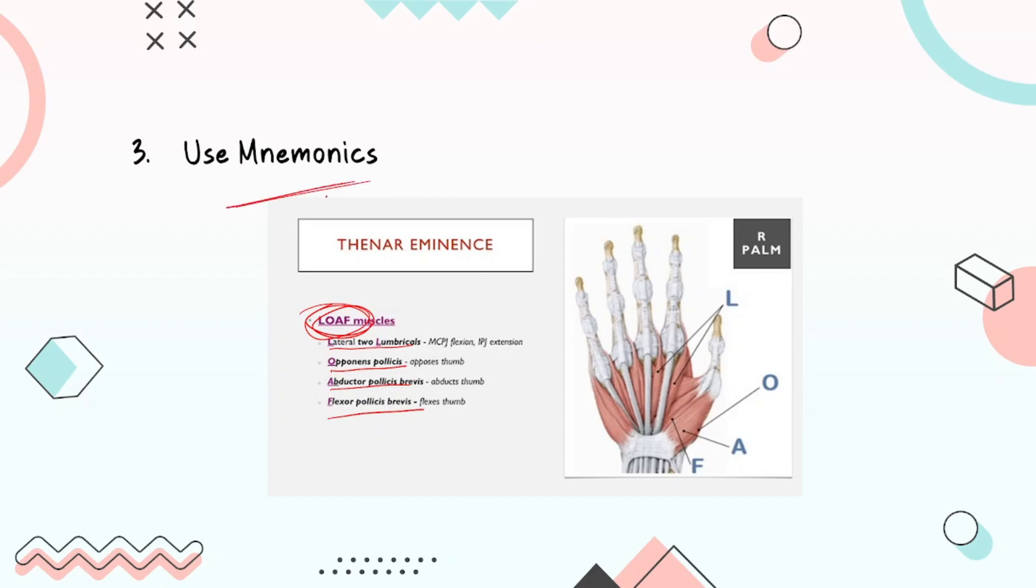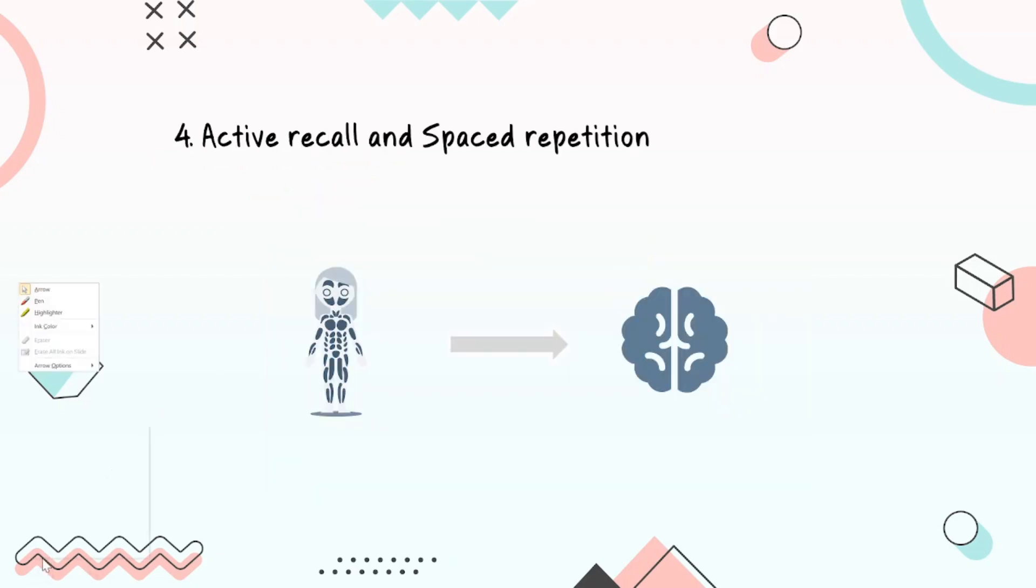The fourth step that I have is active recall and spaced repetition, and I cannot emphasize this enough. Active recall is basically you recalling something you remembered without choosing any help. So you remembered like five muscles, right? Just close your eyes and try to remember them in your mind.